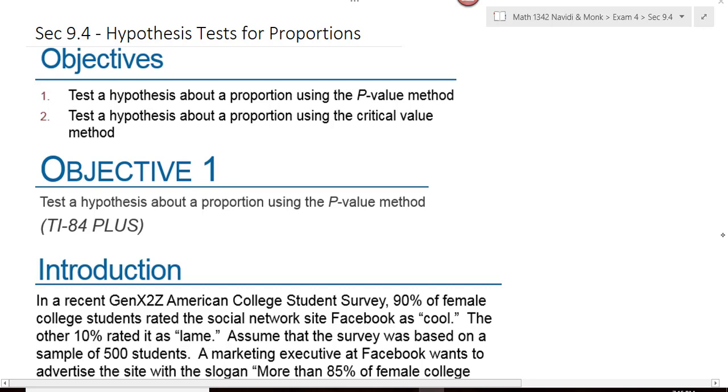Alright, section 9.4 is hypothesis tests for proportions. You're going to feel a lot of similarities between what we did in 9.2 and 9.3.